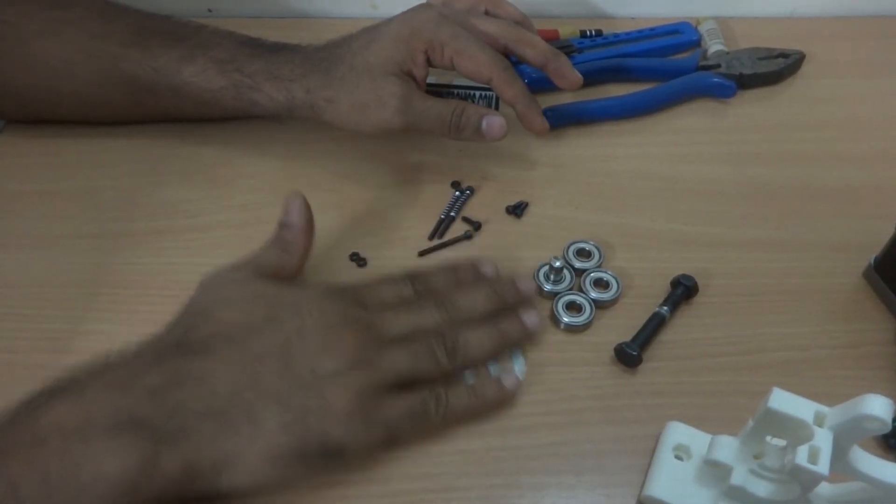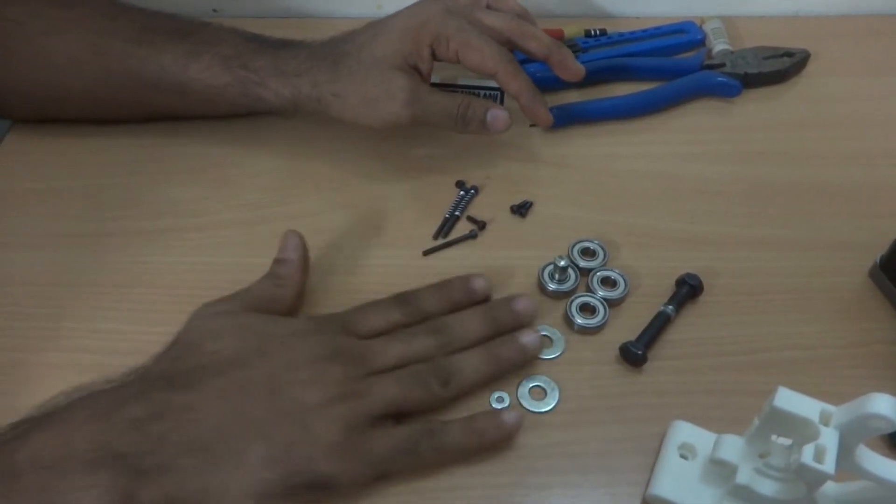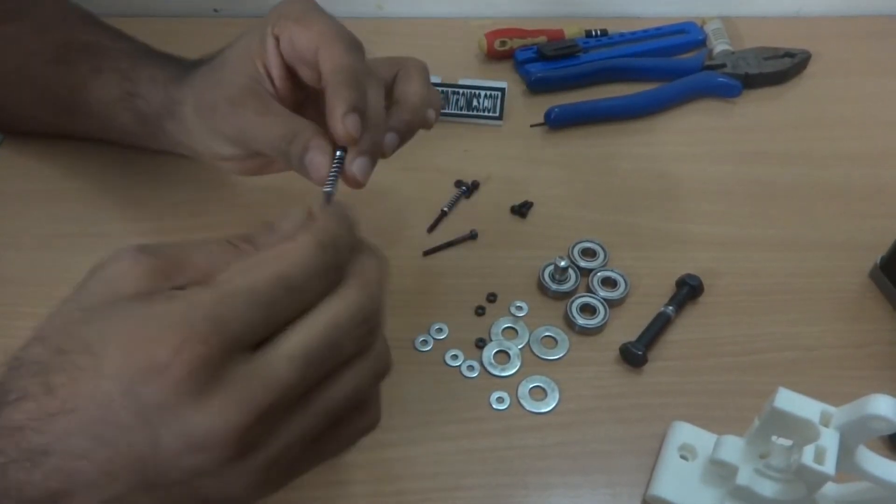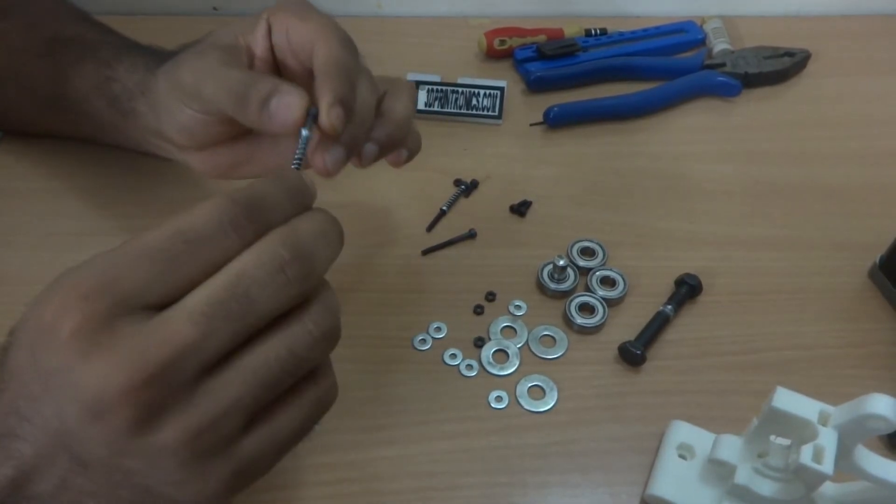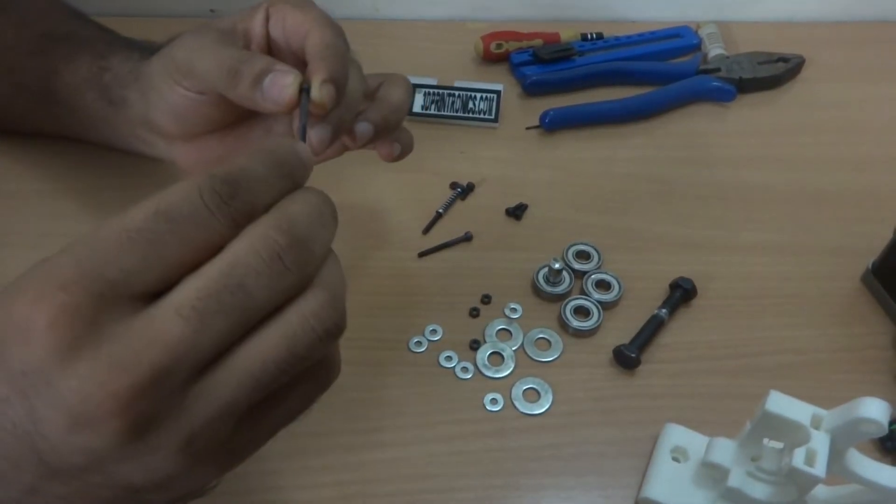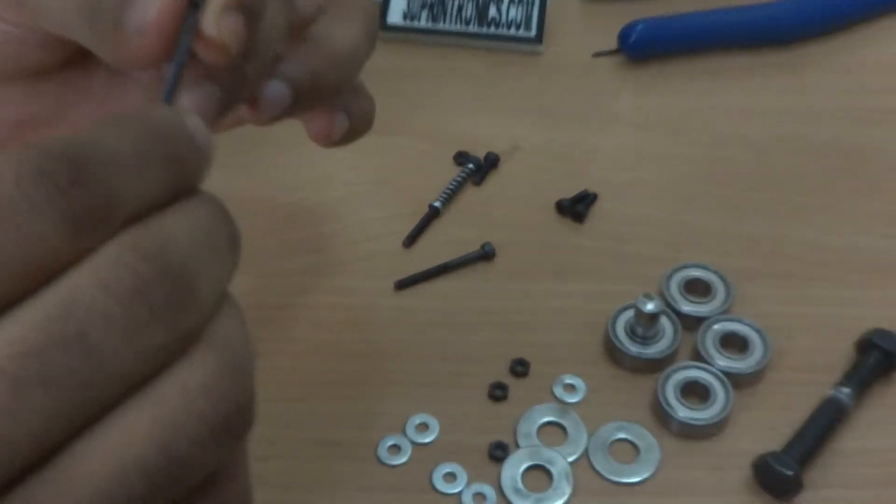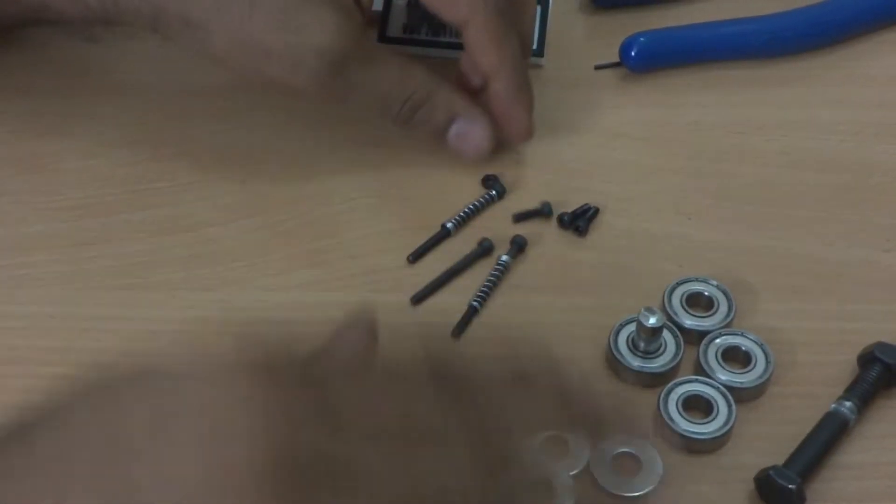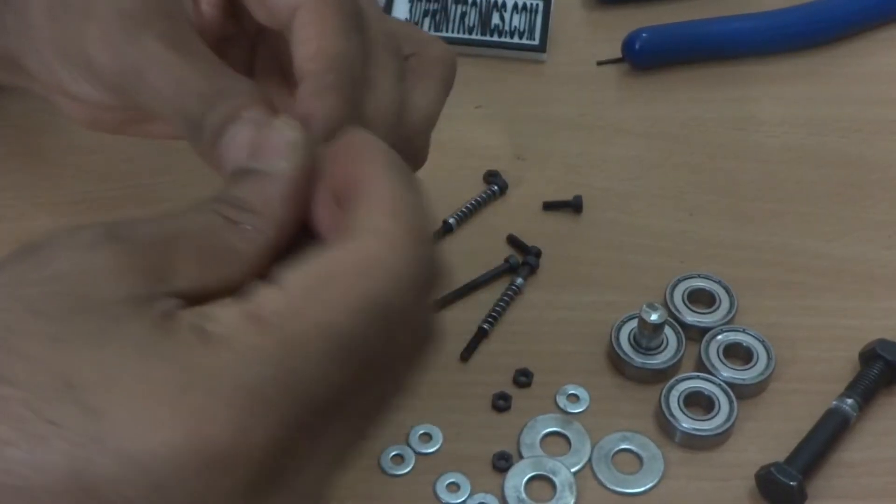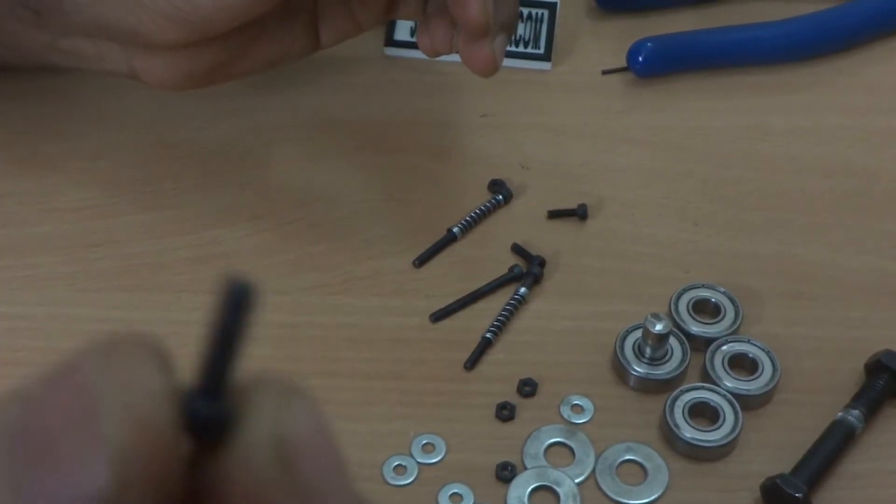Then there are washers, M3 bolts, and nuts. And these are 40mm M3 bolts with springs. With the kit they will come 70mm. Right now we are using 40mm here. These are M3 bolts 10mm in length.